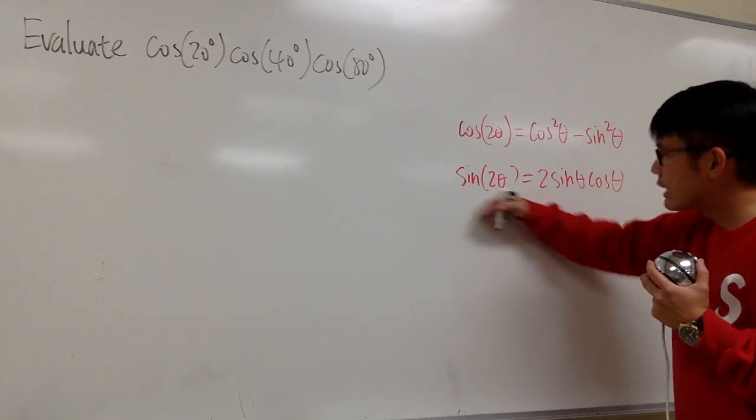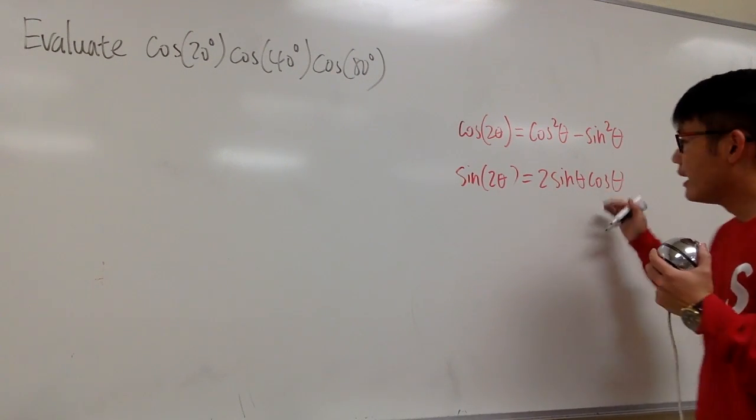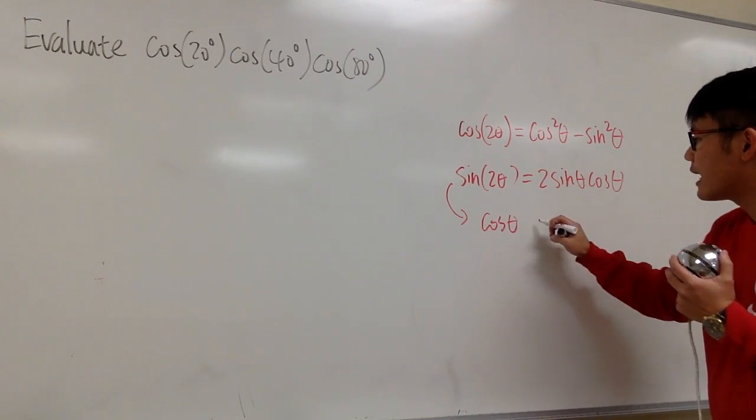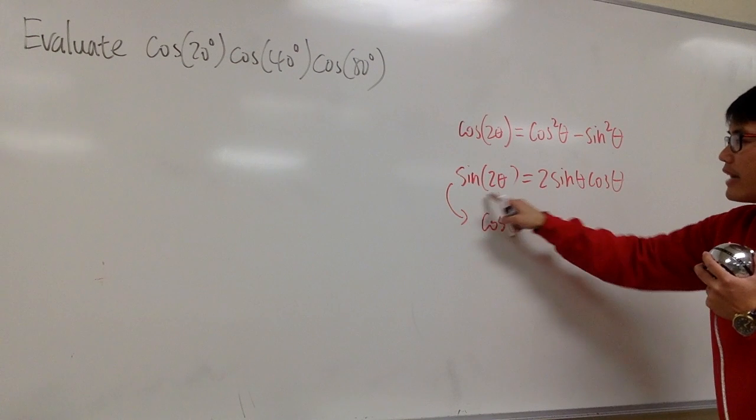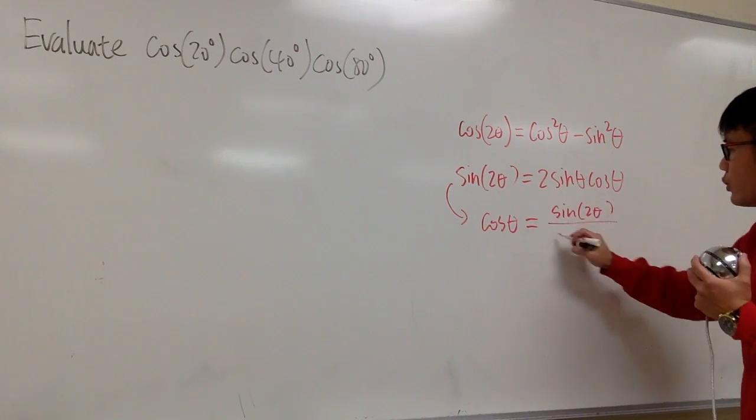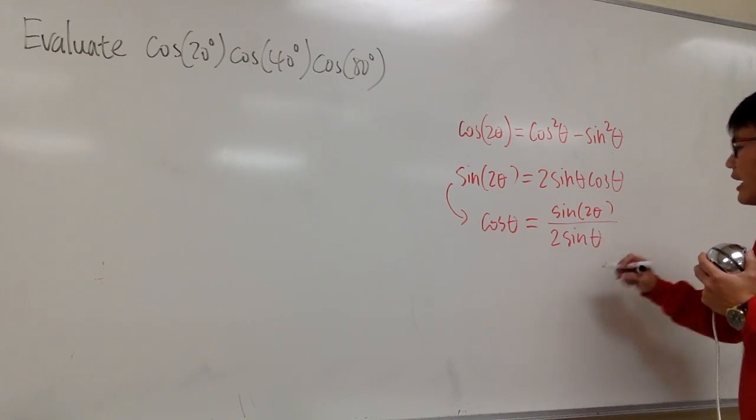It's okay, let's divide both sides by 2 sine θ. In another word, we can look at this equation here, and we can say this is the same as cosine θ equals sine 2θ on the top over 2 sine θ, like this.